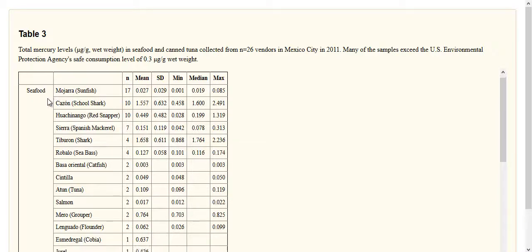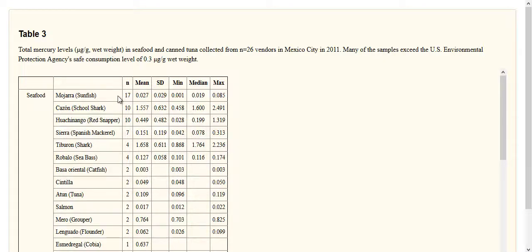So this is seafood. There's 17 sunfish that were sampled and tested for mercury which is calculated in micrograms per gram of wet weight. So wet just the fish as it is, not dried. And it says the EPA's safe consumption level is 0.3 micrograms per gram wet weight. You can see some of these are far above that, like for the school shark here the mean is over 1.5, so that's five times the safe level. The sunfish looks pretty safe, school shark not so much.